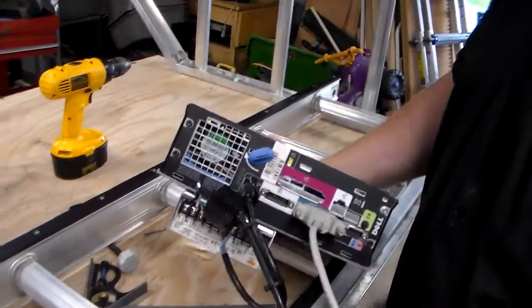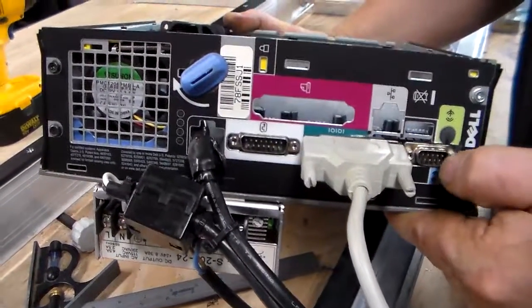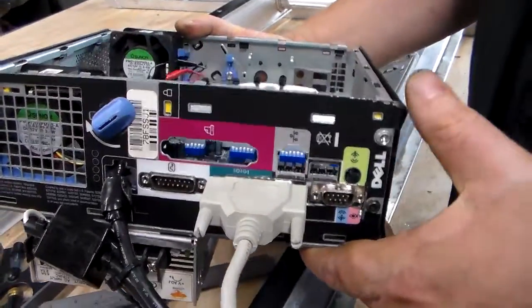On the back side here, this will be for your pendant control. And then this is your limit switches and your e-stop and all that.